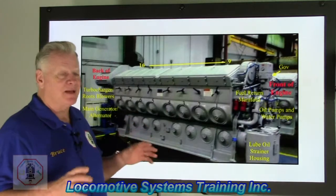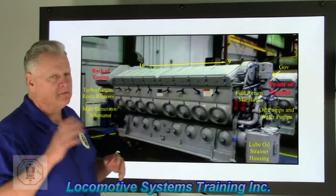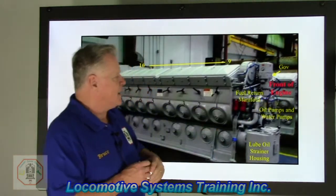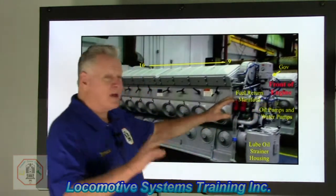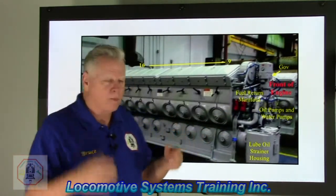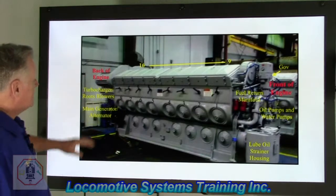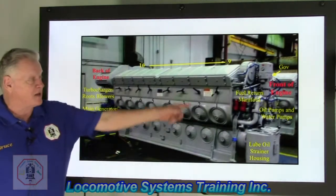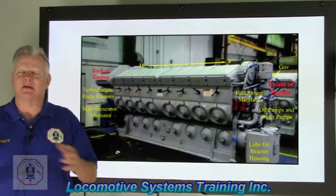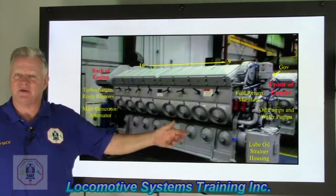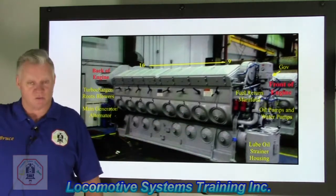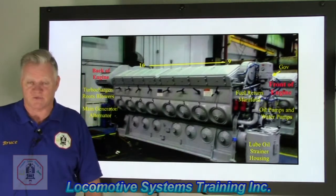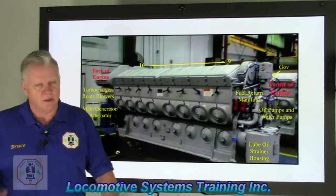I always go by the front of the EMD engine — we're looking at the EMD right now. There's a big red label that says 'front of engine.' That's the front. And at the back of the engine, it says 'back of engine.' Standing at the back facing forward — mentally straddling the generator — my left is the left side of the engine, my right is the right side, my front is facing the front of the engine, and my rear is facing the back of the engine.